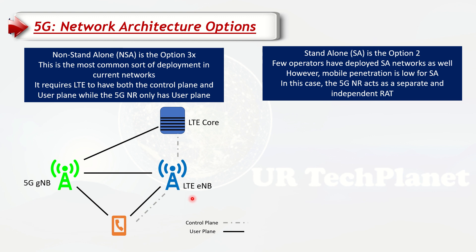Most of the traffic will come through the 5G gNodeB — this is the non-standalone approach, which is what most networks use right now because it is easier to deploy. You just need to add a 5G radio unit — an RRU, massive MIMO unit, or radio head — alongside LTE. You don't need a full 5G core, so it is a simple upgrade from an existing LTE network towards 5G.